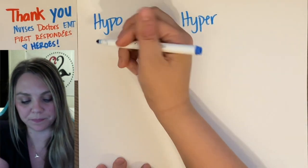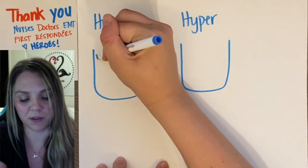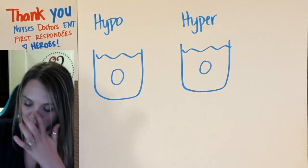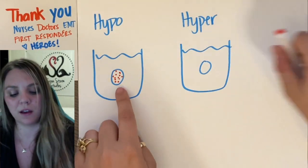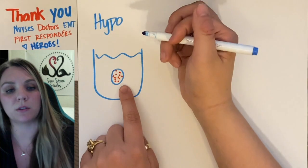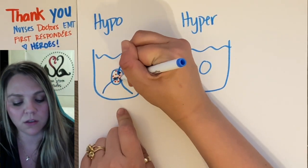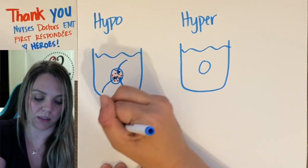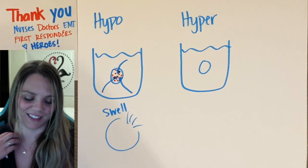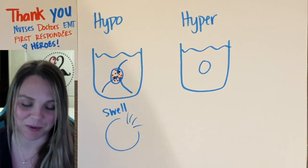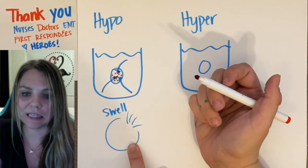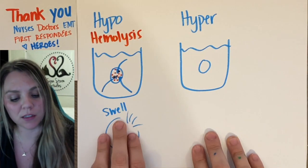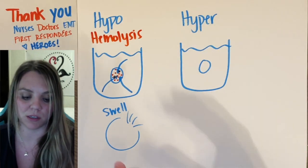Looking at the actual pictures — in a hypotonic solution, my red blood cell has a lot more solute inside than outside. Water flows inside the cell, it swells up, and it will actually burst. This is called hemolysis — when a cell is in a hypotonic solution, water flows in and bursts or swells the red blood cell.